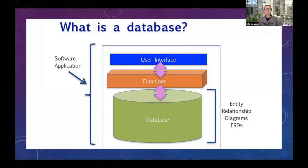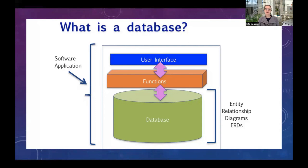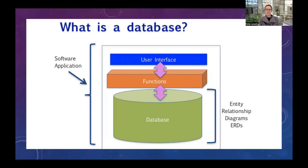The next concept to understand is what is a database? A normal software application — like Zoom, Microsoft Word, or a timesheet system — has three levels: the user interface, which is what you see on the screen; functions, which are the calculations and logic that sit behind the scenes; and then the data, which is held within a database. An entity relationship diagram is used to design the logical design of that database.